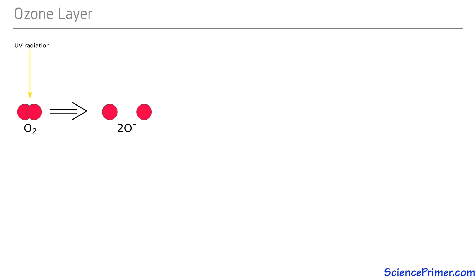These atomic oxygen ions are unstable and in order to achieve more energetically favorable electron arrangements, they quickly react with molecules of diatomic oxygen to form ozone, a molecule containing three oxygen atoms.